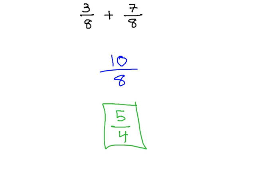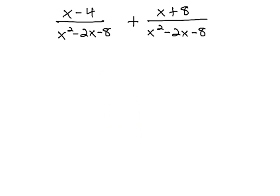We'll follow much the same pattern as we add rational expressions with a common denominator. We have x minus 4 over the denominator x squared minus 2x minus 8 being added to x plus 8 over the same denominator x squared minus 2x minus 8.